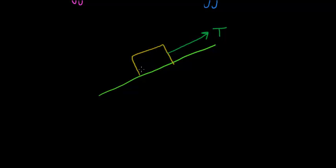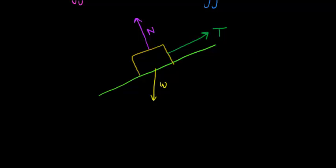We know that there's always a weight component that is downwards. And then there is, in this case, a normal force — a force that the surface is applying. And what we want to know is what is the total work that's happening in this whole system?